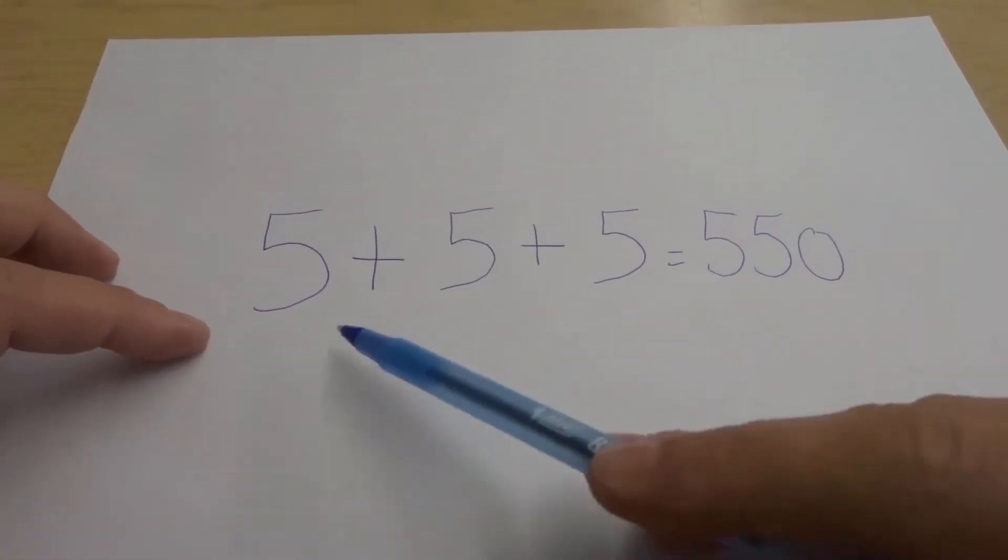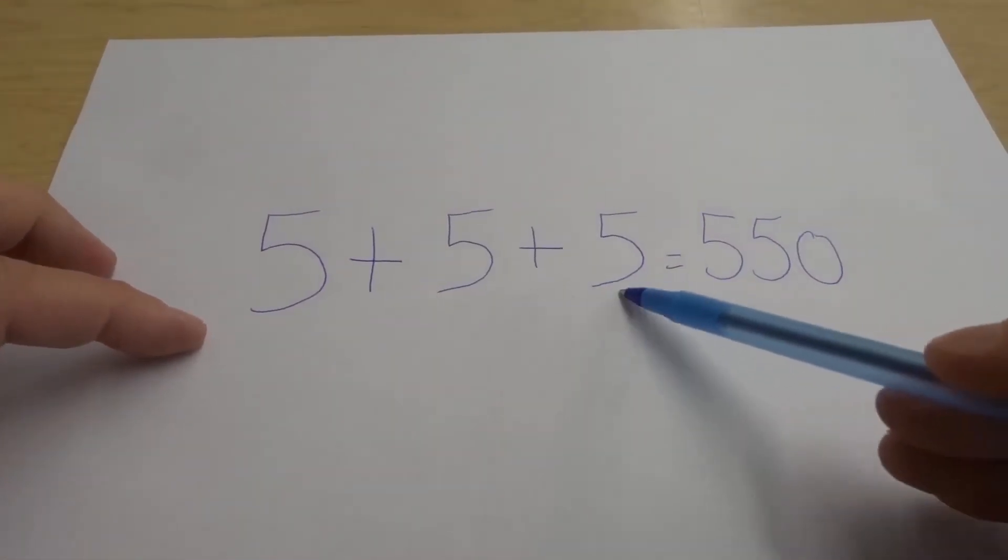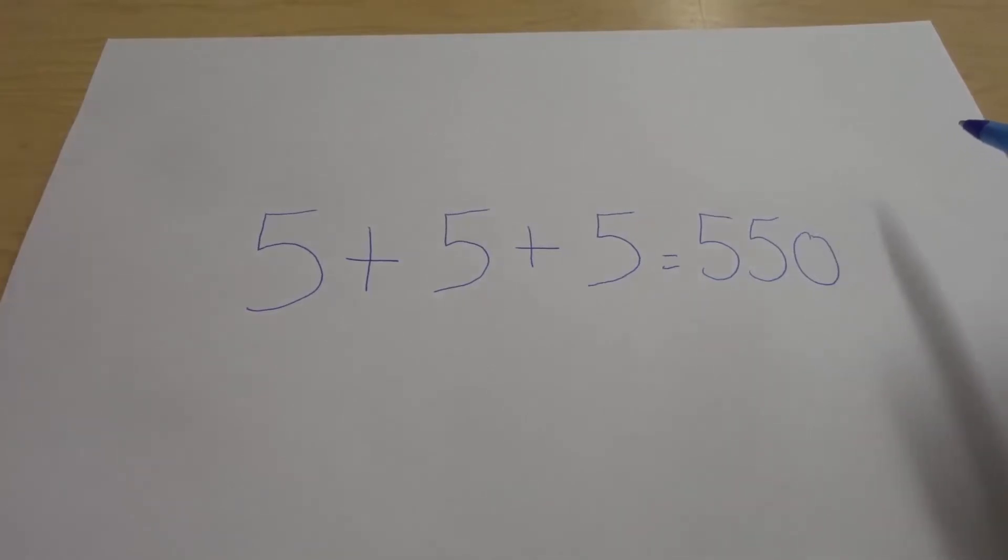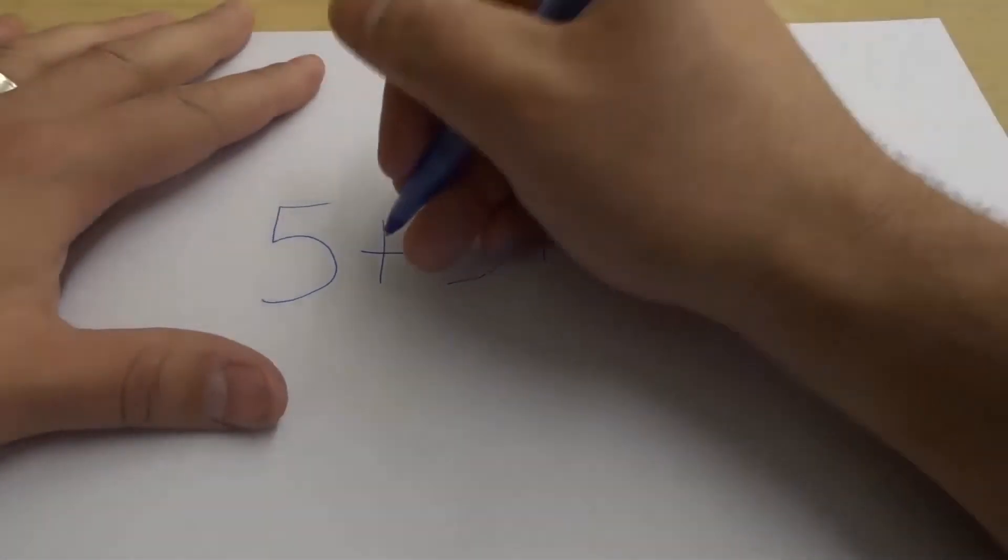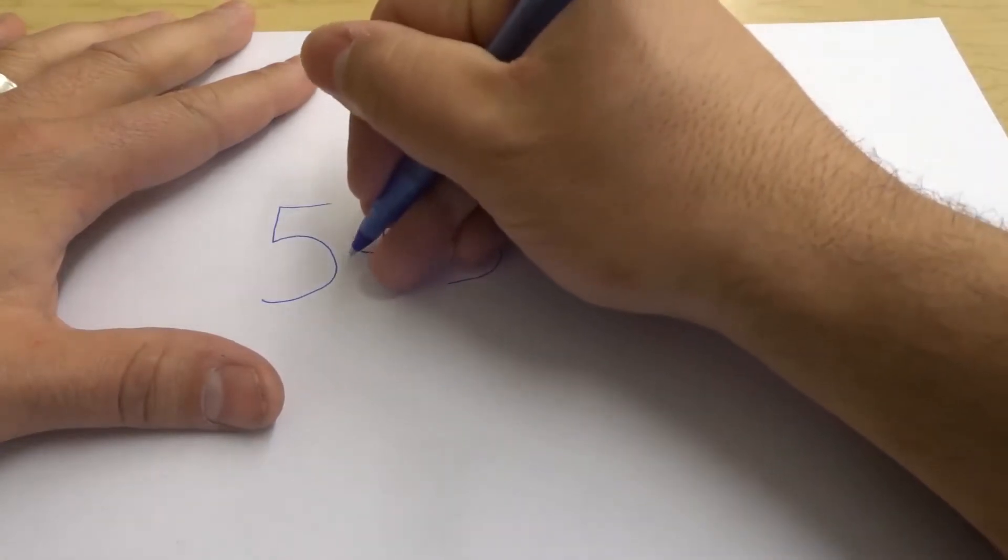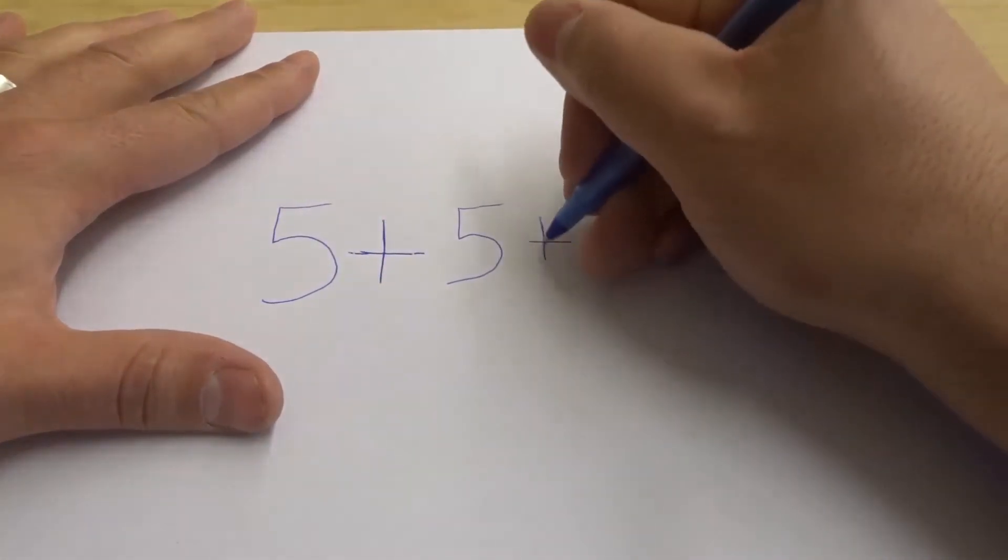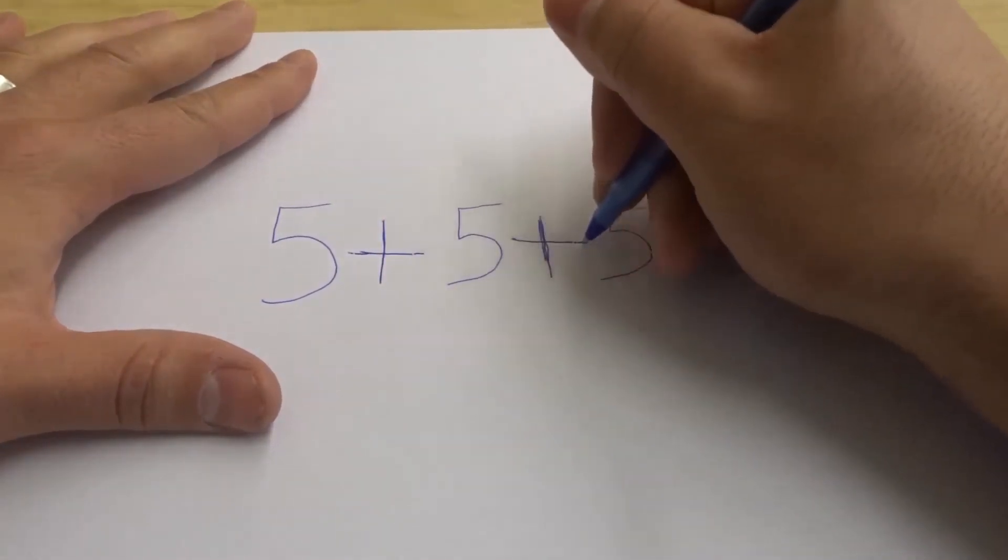So what we have here is 5 + 5 + 5 = 550. And you're going to tell the person you want to fool that they can only add one line to make this make sense. Now when you're doing this, here's a quick little tip: make sure when you're doing your plus signs, you're making them nice and wide, because it's going to make it a little bit easier.